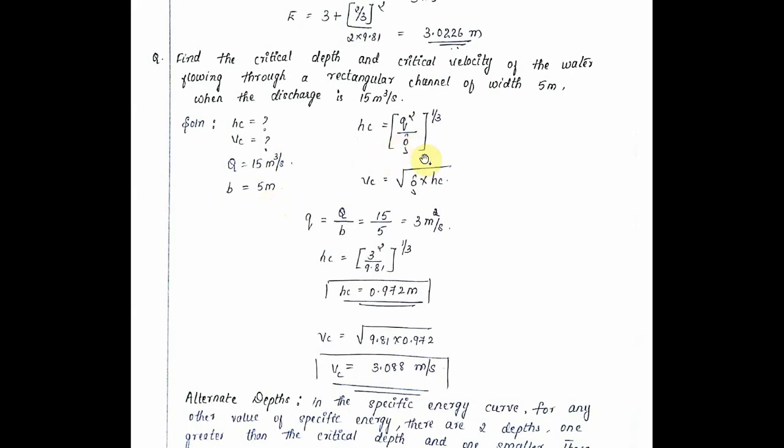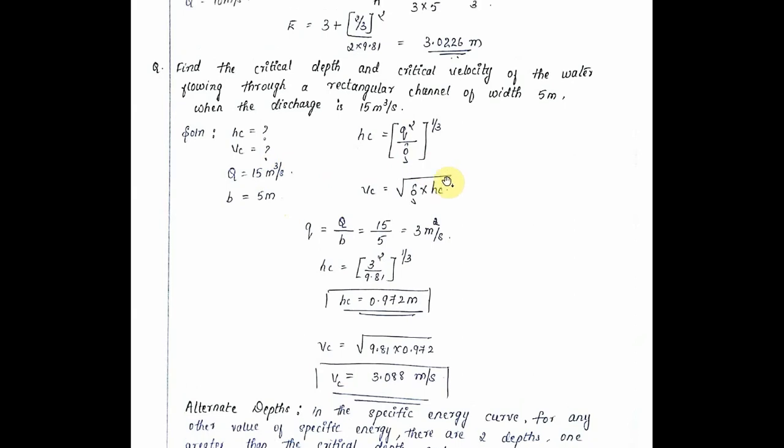Therefore hc is equal to Q squared upon g to the power 1 by 3. Critical velocity vc is given by root of g into hc. So discharge q equals Q upon b, that is 15 divided by 5, which is 3 meters per second. And critical depth hc equals 3 squared divided by 9.81 to the power one upon three.